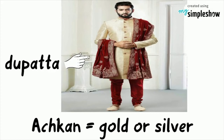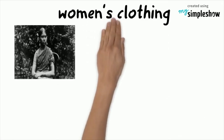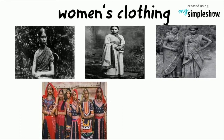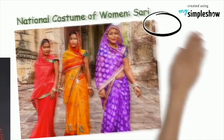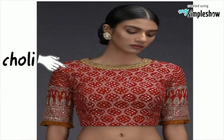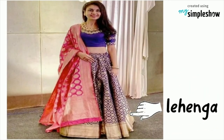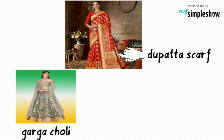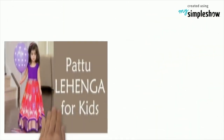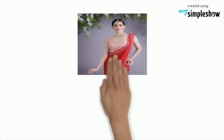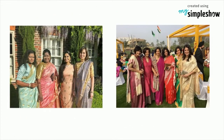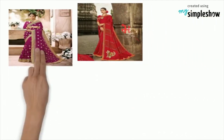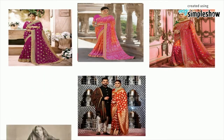A scarf called a dupatta is sometimes added to the achkan. In India, women's clothing varies widely and is closely associated with local culture, religion, and climate. Traditional Indian clothing for women includes saris, worn with choli tops. There is also a long skirt called a lehenga worn with a top. Some women wear a dupatta scarf to complete an ensemble called a ghagra choli or salwar kameez. Some saris have embellishments such as mirrors or embroidery, worn on special occasions. Indian wedding saris are typically red or pink, a tradition going back to India's pre-modern history.